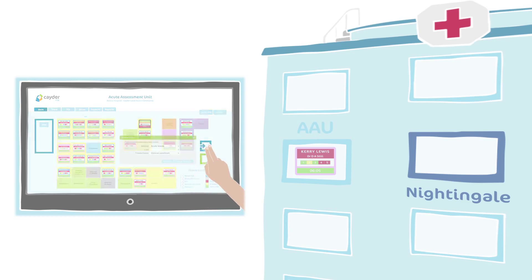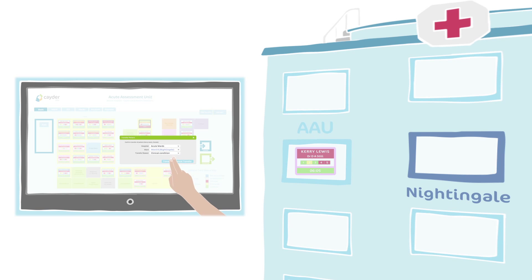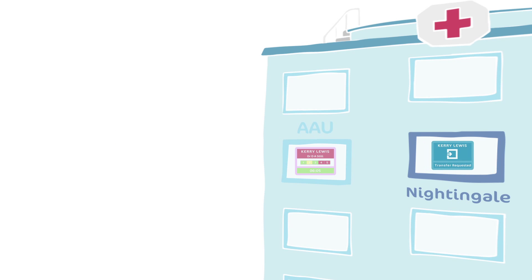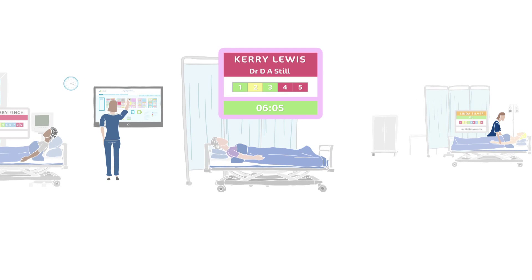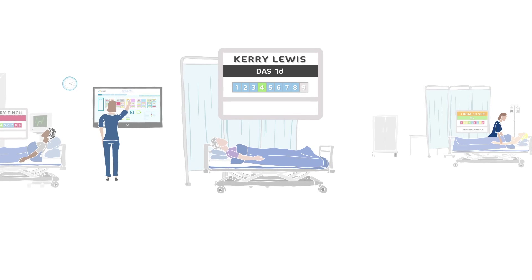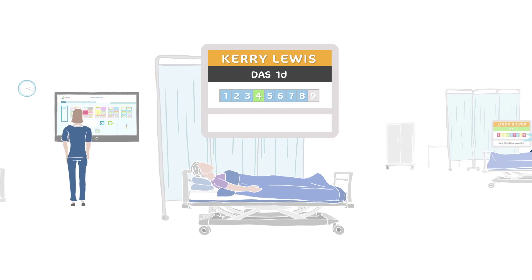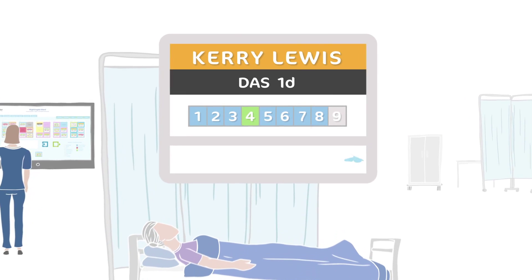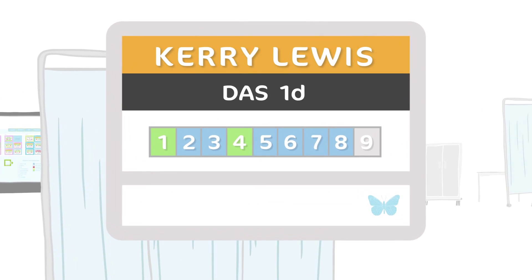Using PFM, staff request the transfer. A notification prompts a swift response. Mrs Lewis is moved to Nightingale Ward, along with all her data, saving the receiving team from recreating it from her notes. The patient card's design has changed to reflect the information used during this part of her hospital stay. Staff can tell that Mrs Lewis has already been in hospital for one day, is diabetic, has dementia, and has already had blood tests taken.